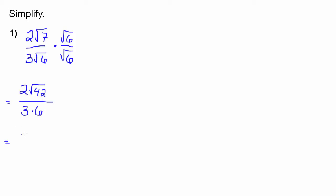And then the numerator is going to stay the same, 2√42. And then 3 times 6 is 18. So you may think you're done, but remember, you've got to check to see if anything can divide out.